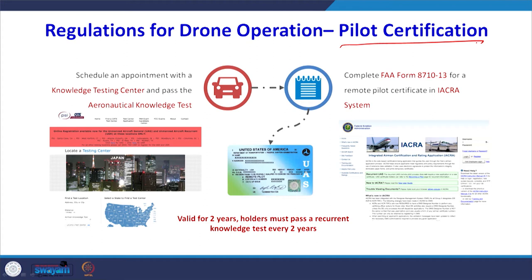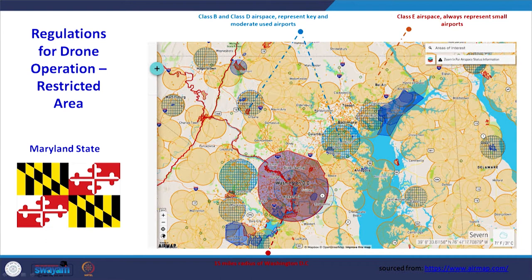Similarly, each country including India has framed its own regulations for flying drones. Pilot certification is required, and there are training centers where pilots are trained. A GIS-based map can indicate restricted areas — for example, for Maryland state in the USA, circles of different diameters show areas where one cannot fly and collect data.